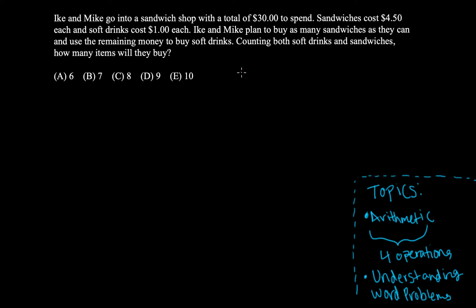All right, so let's go ahead and just define some of our clues about this. First, they're saying your total is $30, they're saying sandwiches cost $4.50, and they're saying $1 is the cost of each soft drink.